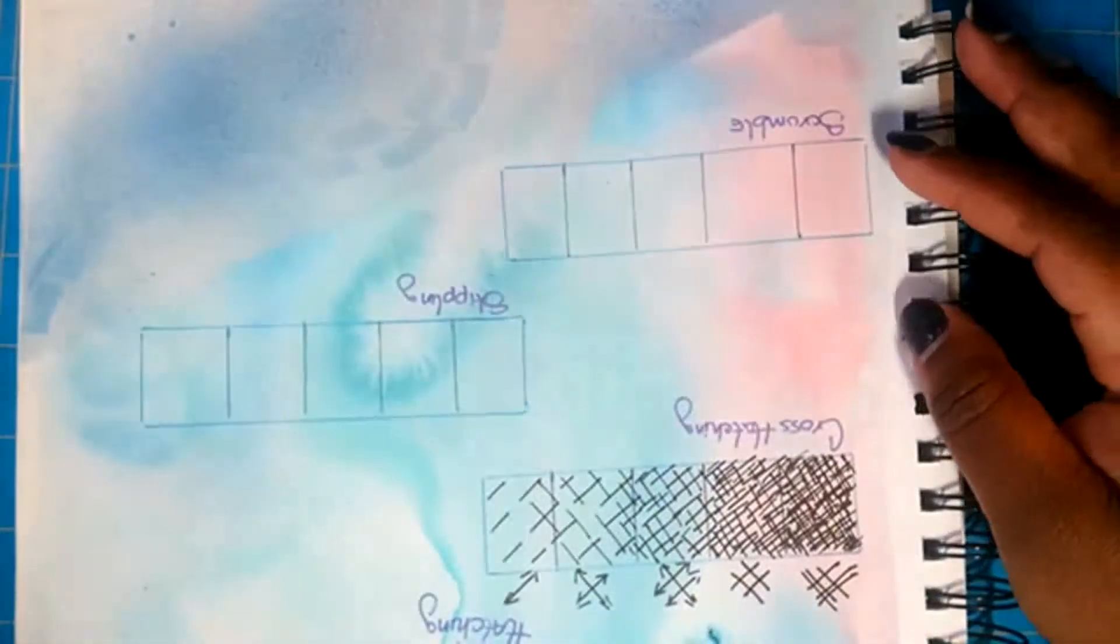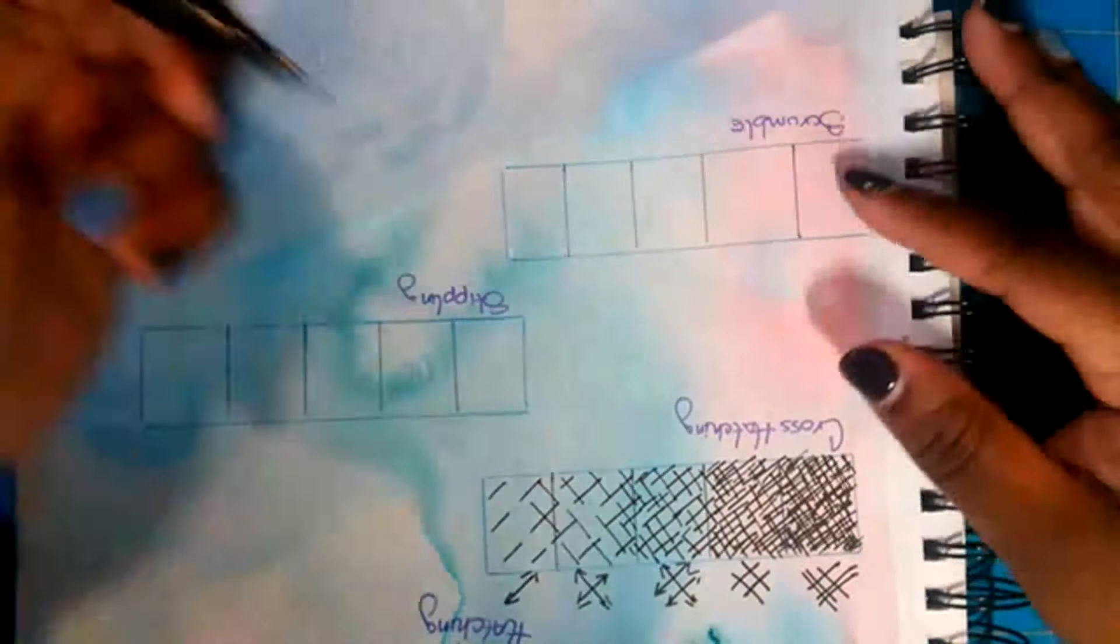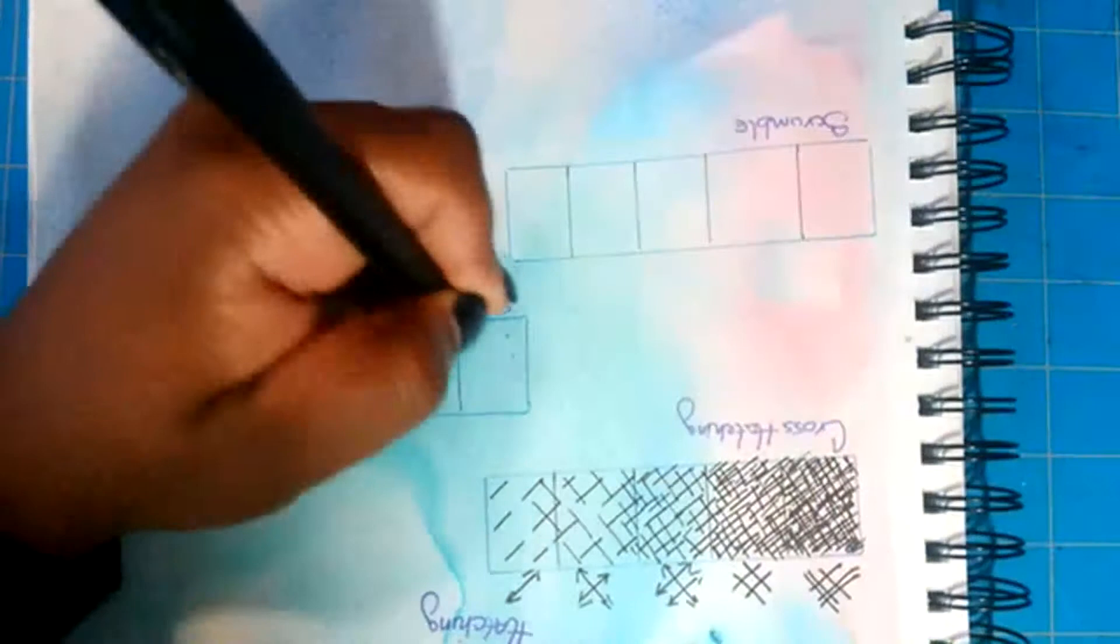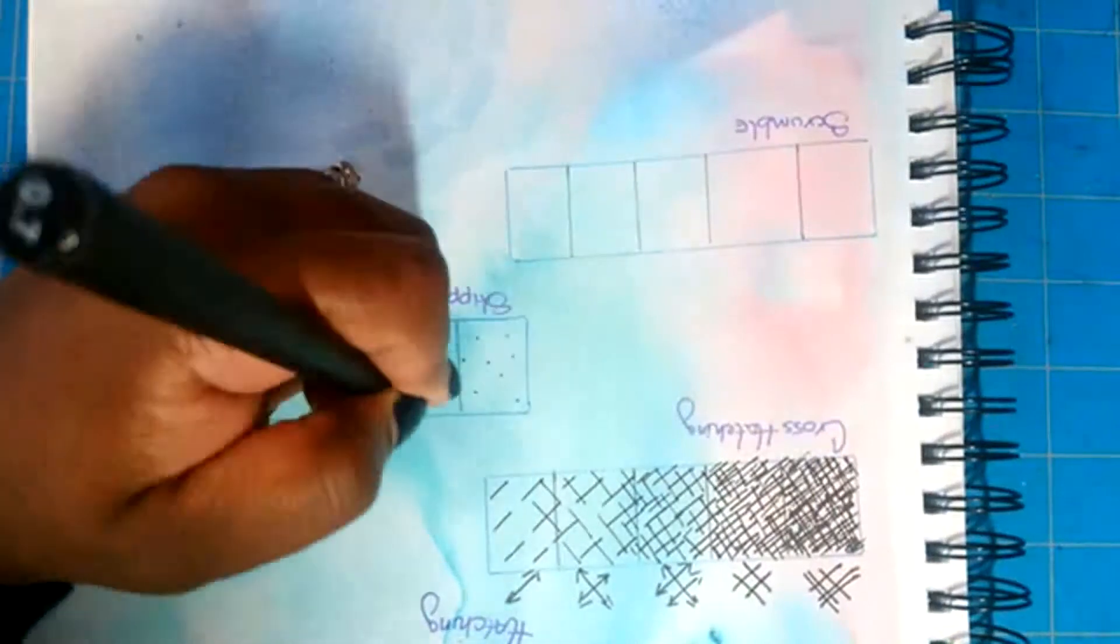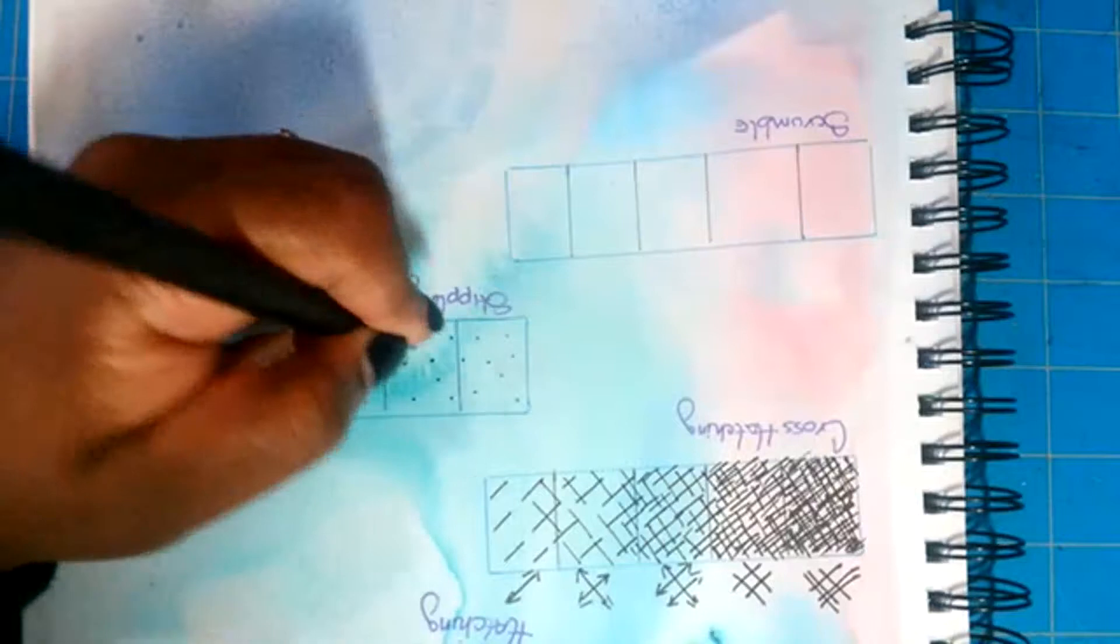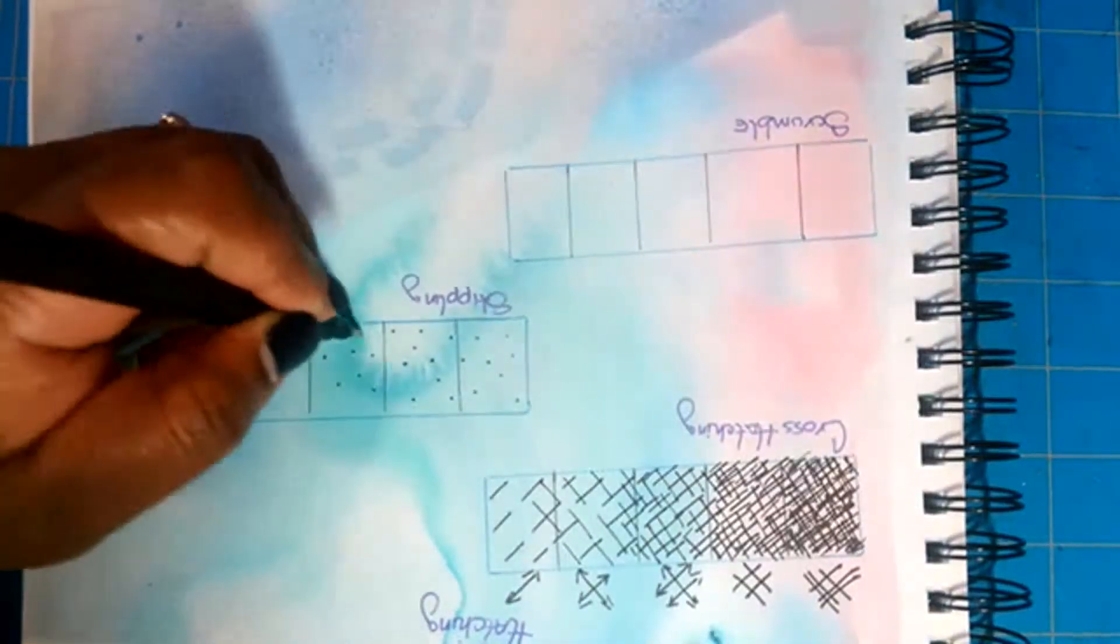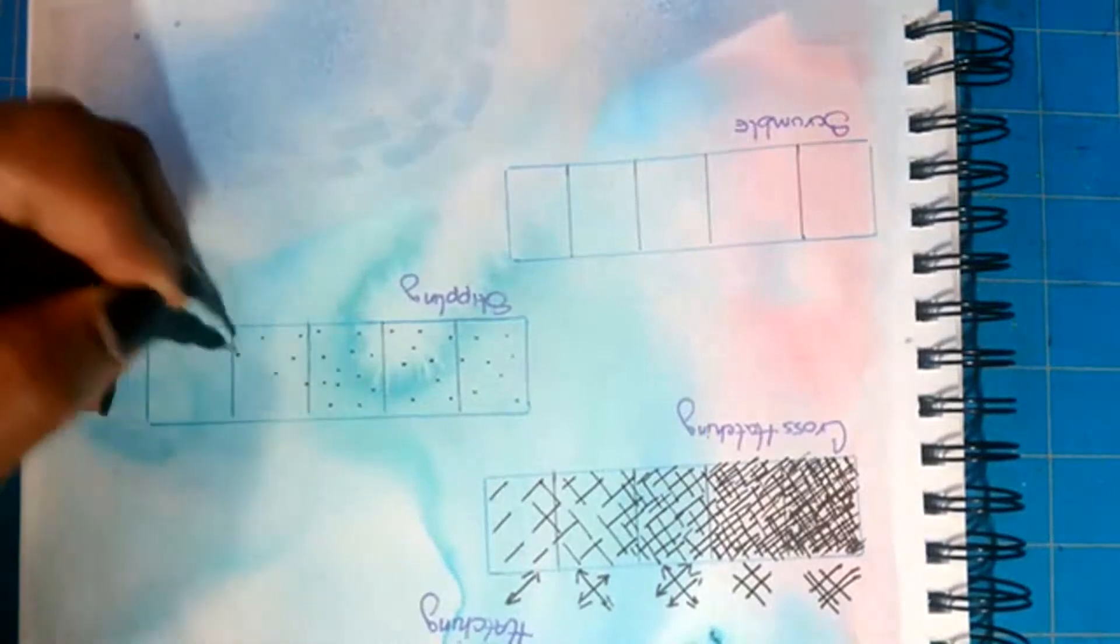With stippling again I'm going from light to dark. You're going to start with just spaced out dots and your steps here, you want to make sure that you are creating the same value all the way across in this first step.